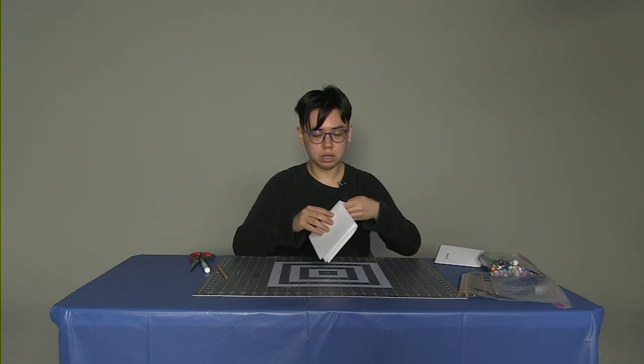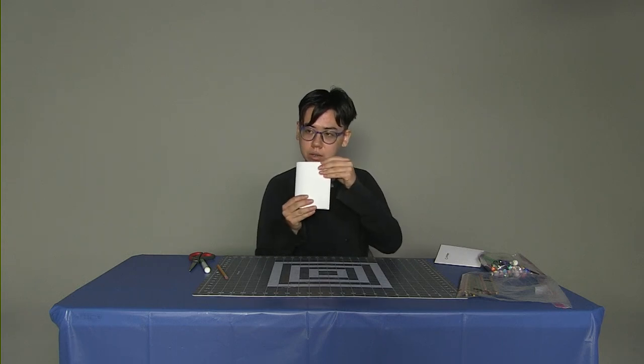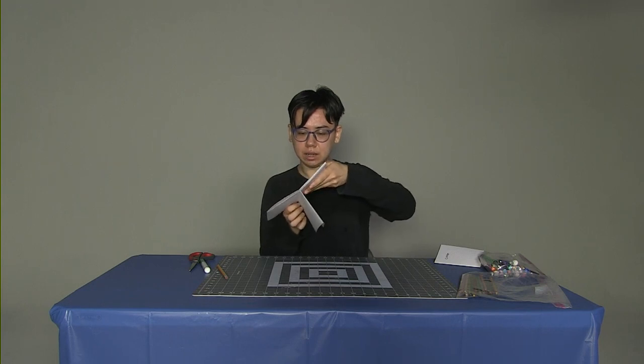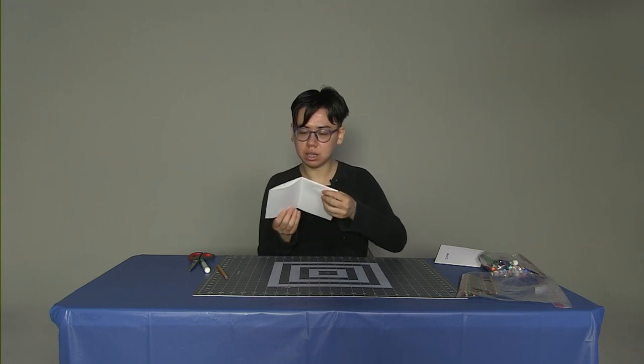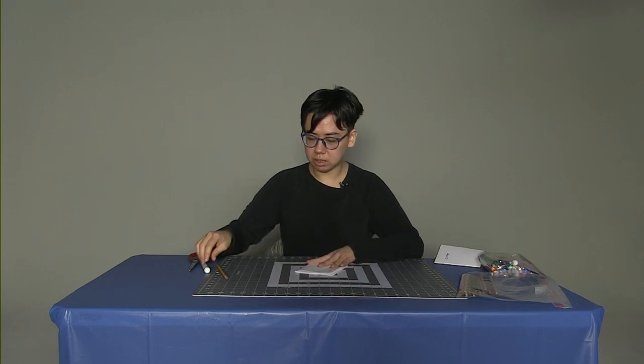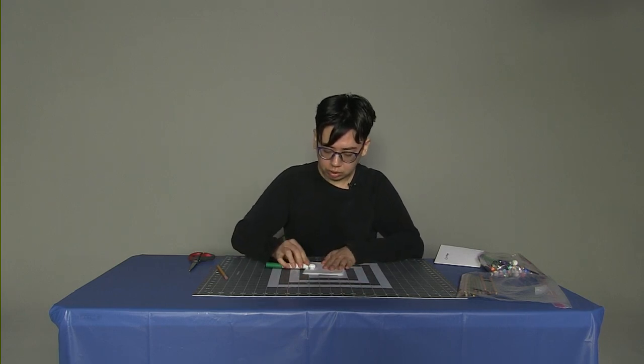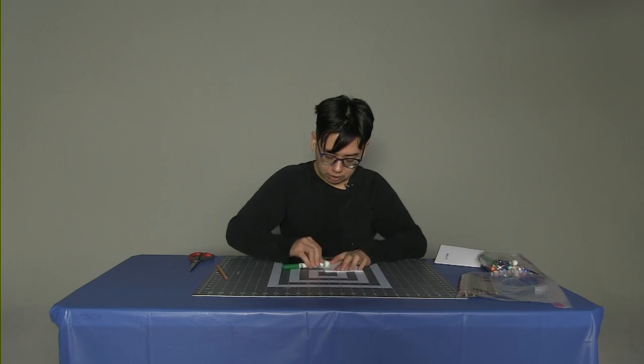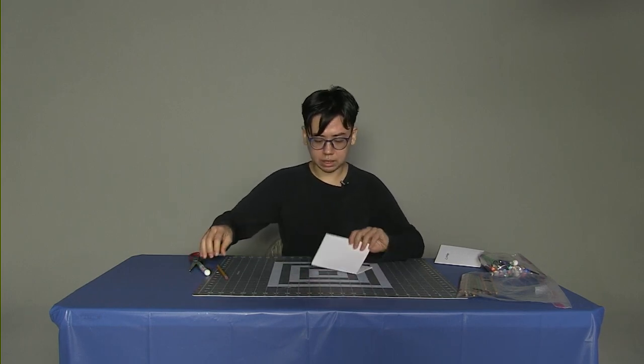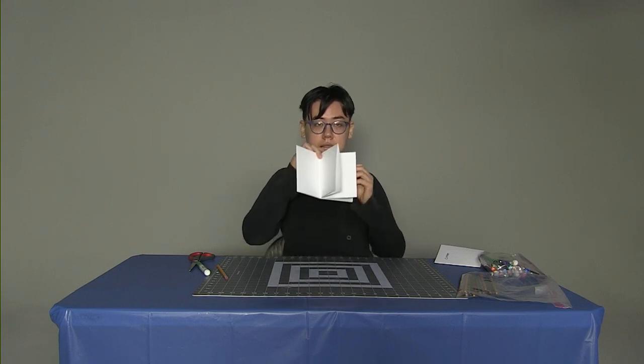Then what you do is you flatten all of it into a book. So I have my plus sign. And then this page starts to go in, this page starts to go in, and I have a book. I want my creases to be tight again. So I'm just going to go over each of these one more time. So that I have something that is pretty tight, like this.